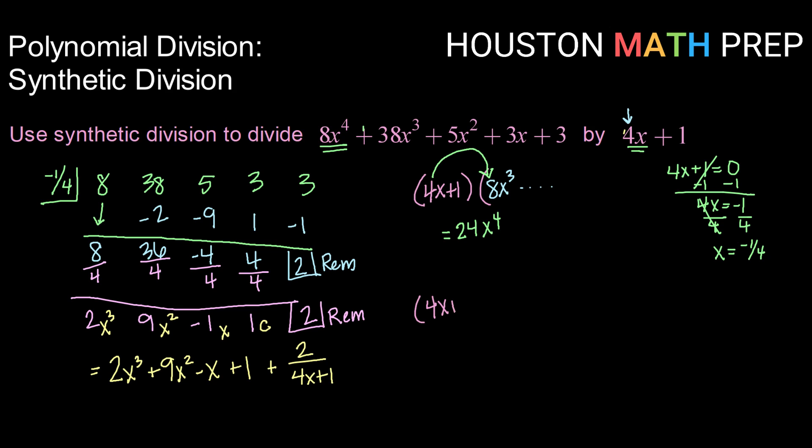When we look at our answer after we've divided, taking that 4x plus 1 divisor times our answer of 2x cubed as our first term that we got afterwards, and checking that: 4x times 2x cubed gives us 8x to the 4th, which is what we're supposed to have as our first term. So it just corrects that error when we have a coefficient in front of the x.